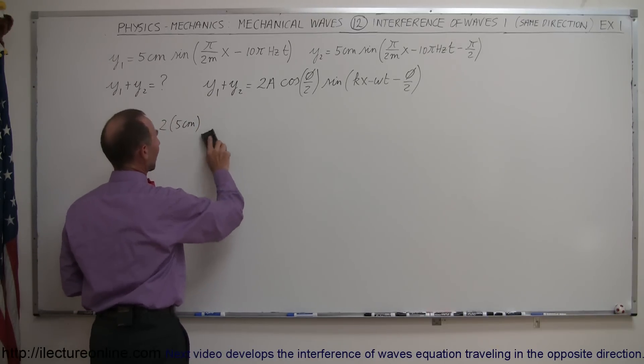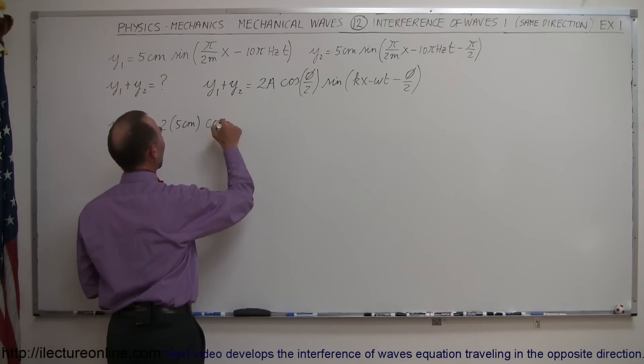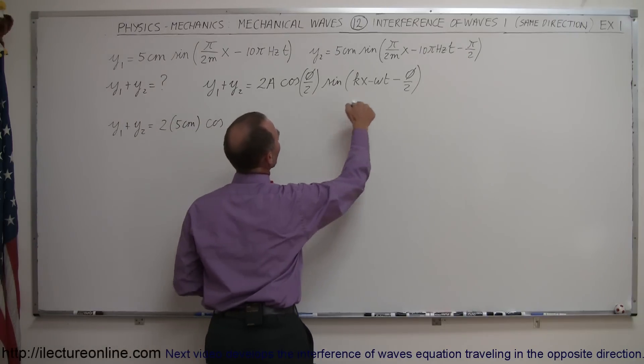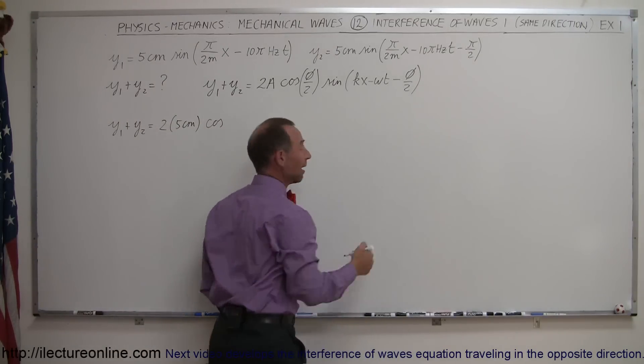So better write the cosine. Times the cosine of half the phase shift, so the phase shift is pi over 2, half of that would be pi over 4.